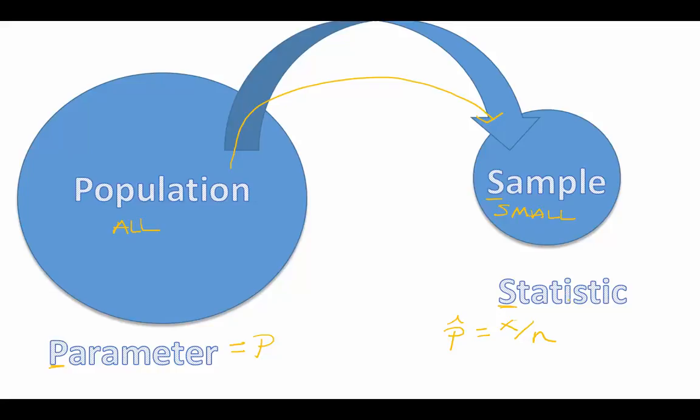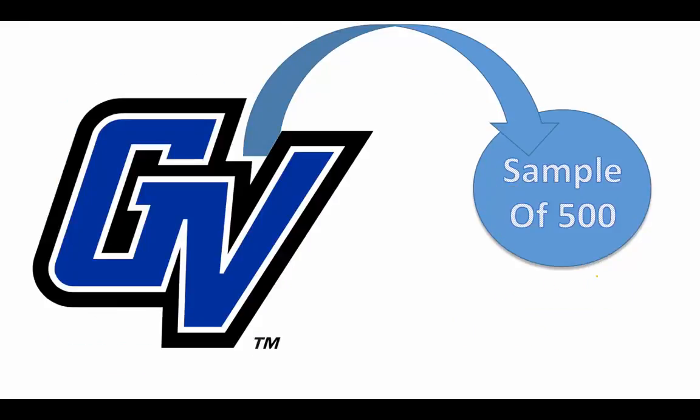So to put that into the context of an example, we're going to look at all Grand Valley students, and then a sample of just 500.